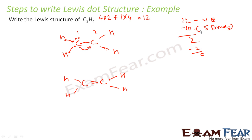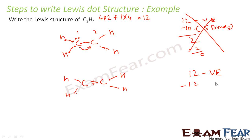Let's start everything from scratch again — the previous structure is cancelled. We started with 12 valence electrons. In this new structure with a double bond, there are 6 bonds total, so 12 electrons are used for 6 bonds, and I am left with 0 electrons.